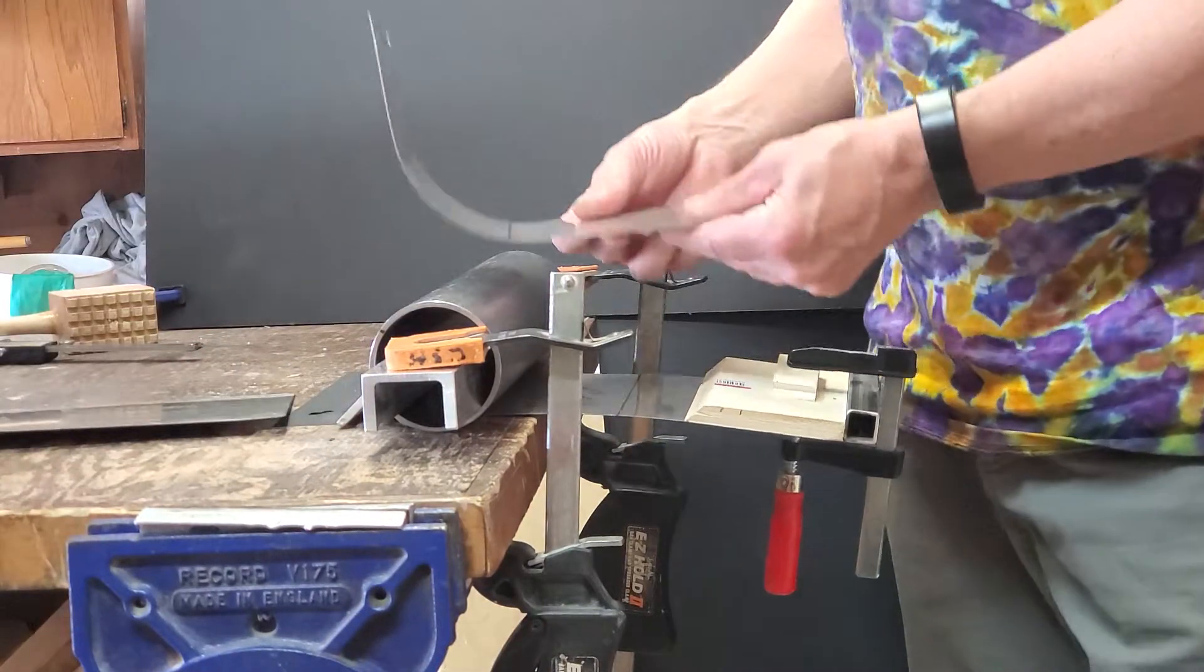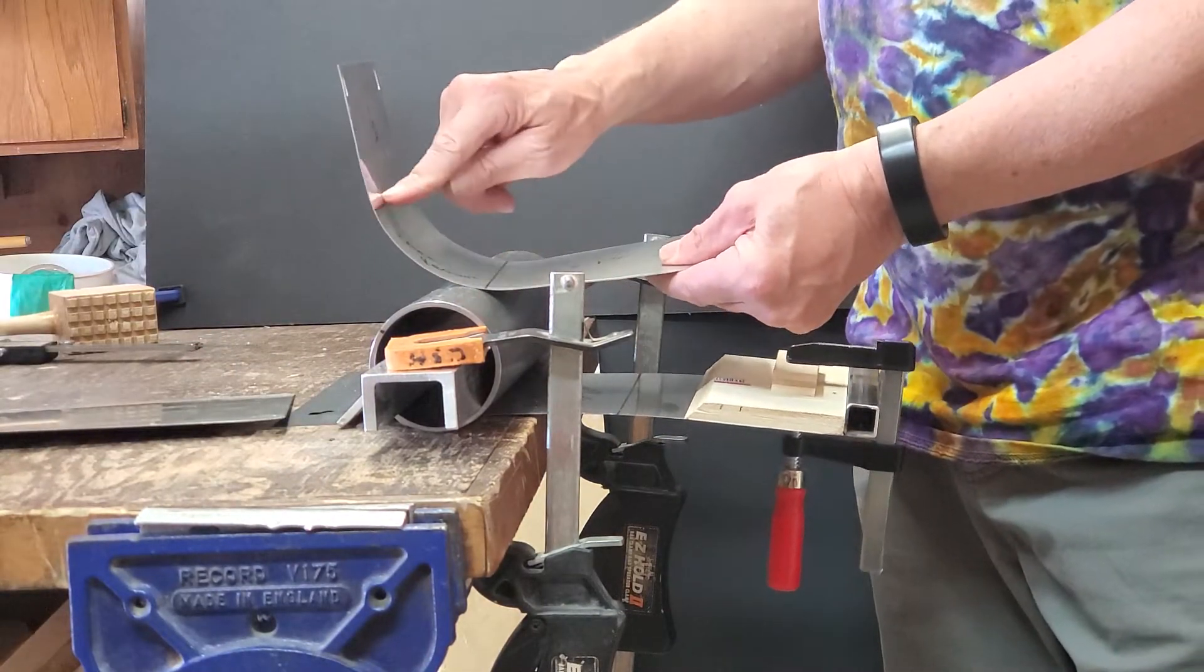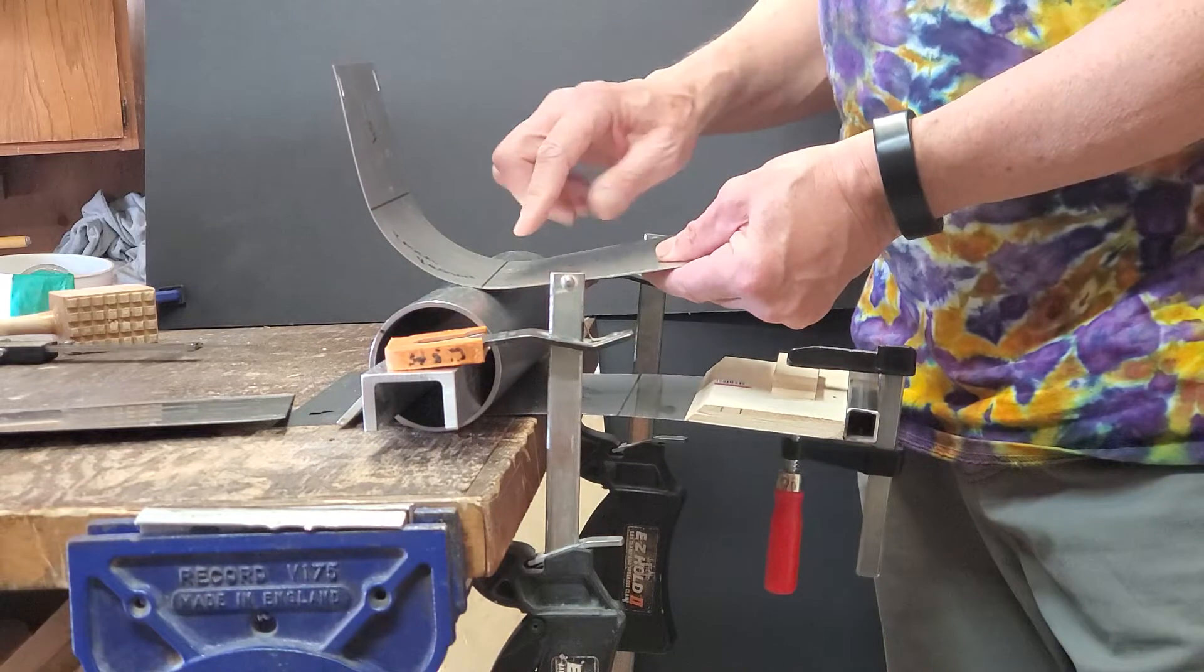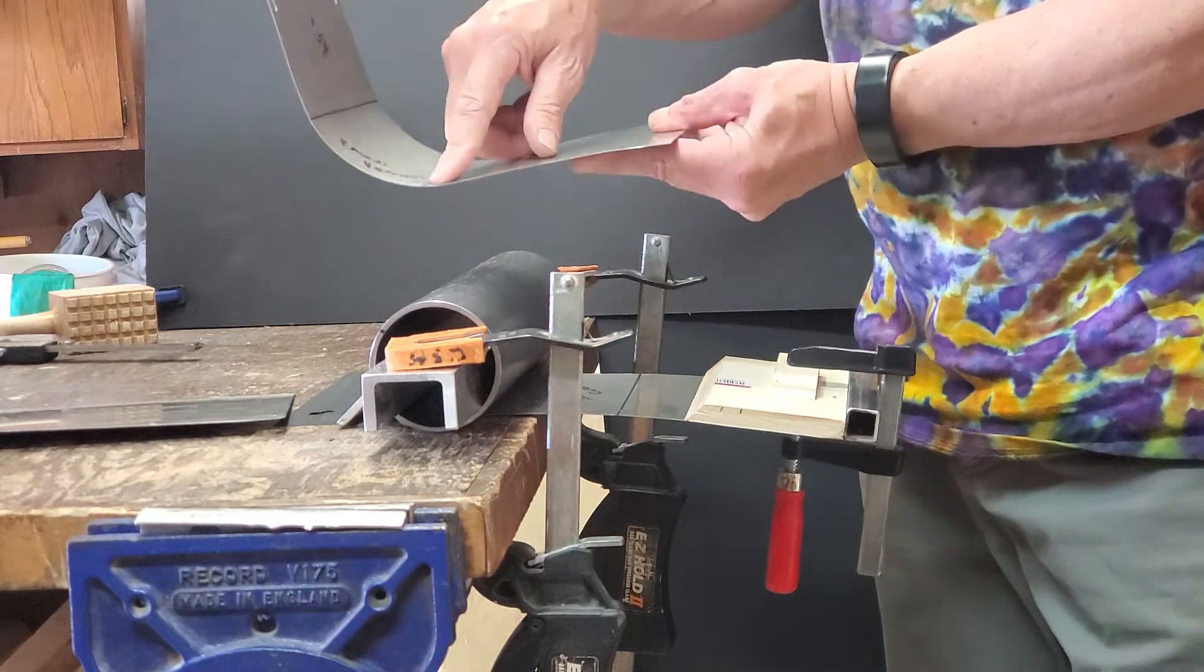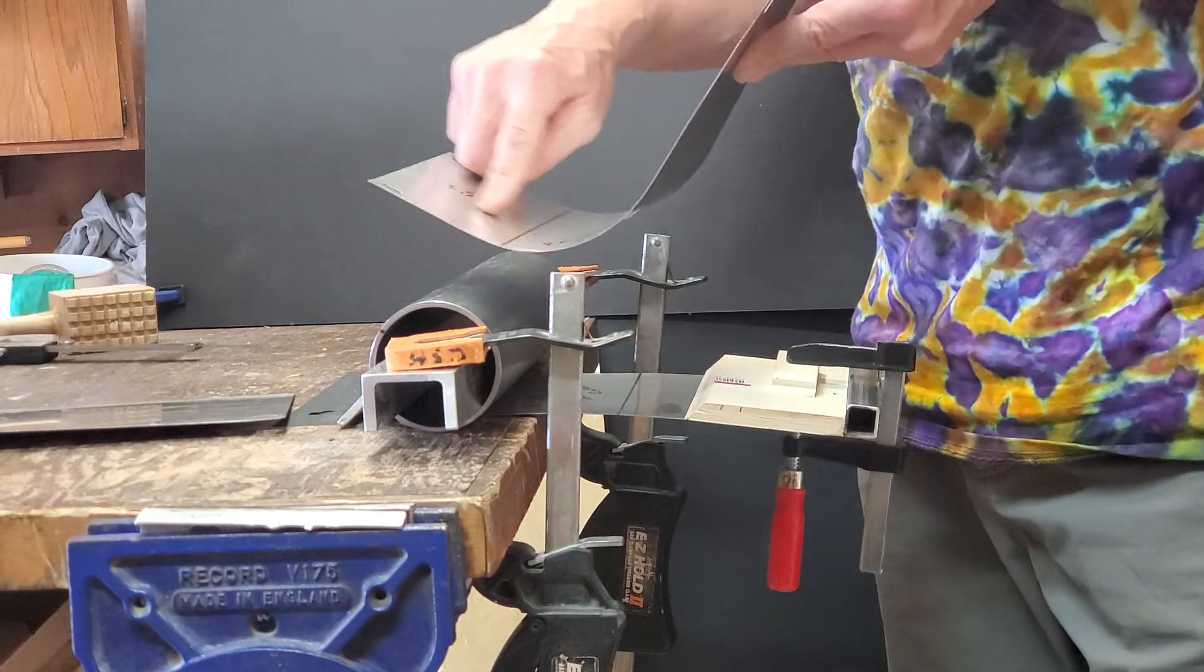What we have to do is create this radius bend in this region right here, maintaining flatness through here and through here.